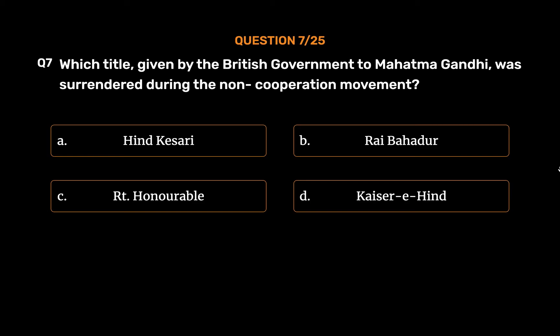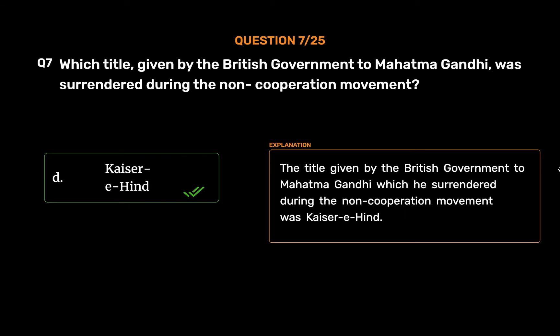The correct answer is Option D: Kaisari Hind. The title given by the British government to Mahatma Gandhi which he surrendered during the non-cooperation movement was Kaisari Hind.